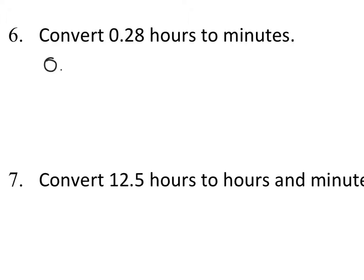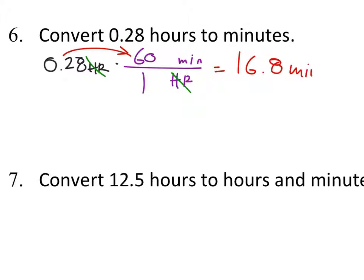0.28 hours. We're going to convert this to minutes. So I'm going to multiply this by some number of minutes per hours, so that my hours will cancel out. Well, we know that it's 1 hour for 60 minutes. So, 0.28 times the 60 gives me 16.8 minutes. And again, don't forget, there is a 1 there. We are multiplying the denominators. It's just 1. I mean, if we wrote it like this, I'm okay with that. It's just, most people like to see it just like this.